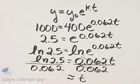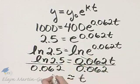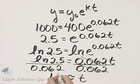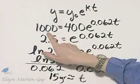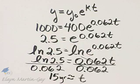It is exactly natural log of 2 and 5 tenths divided by 0.062. It's approximately, to the nearest whole year, 15, and that will be years. So it will take about 15 years for the duck population to get back up to 1,000.